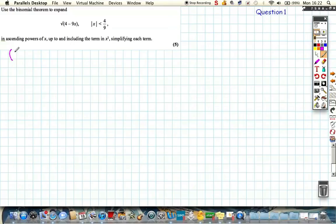So let's rewrite 4 minus 9x. And as it's the square root, it's to the power of a half.